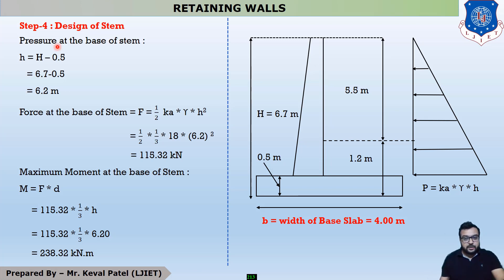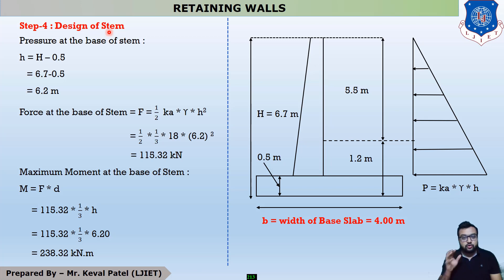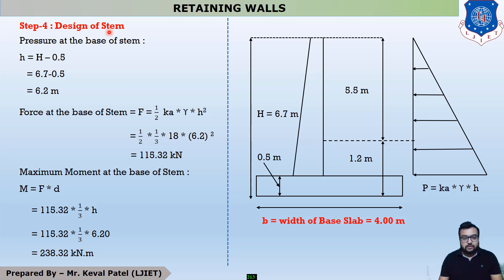After the four stability checks, we move to step number four: the design of the stem. In any example, we find steps one, two, and three. If the question asks to design the stem only, we calculate steps one, two, three, and four. If the question asks to design the heel slab only, we skip step four and move directly to step five. So let us start step number four — the design of stem.